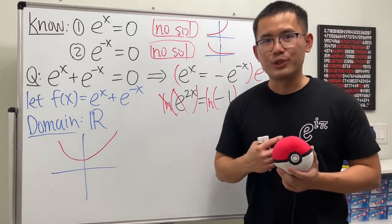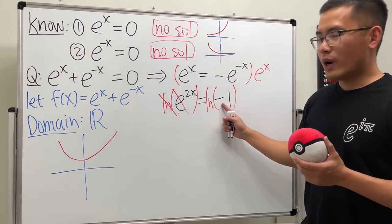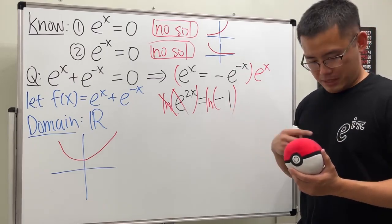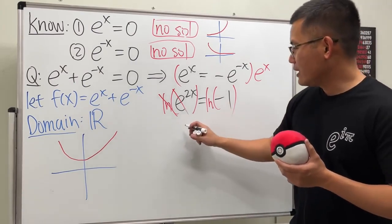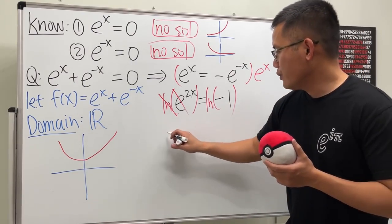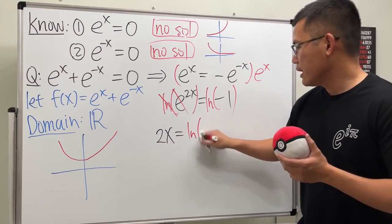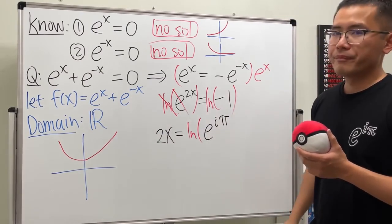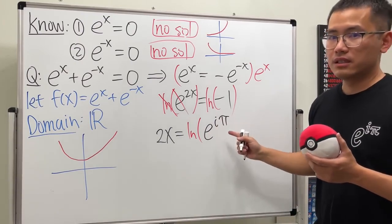The quick way is this is actually on my shirt already. We can write negative 1 in the polar form, namely e^(iπ). So right here we are going to get 2x equals ln of e^(iπ). I can prove to you guys that this is negative 1.